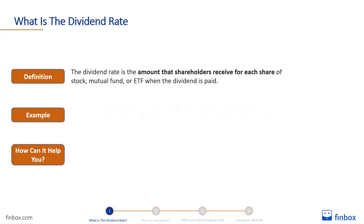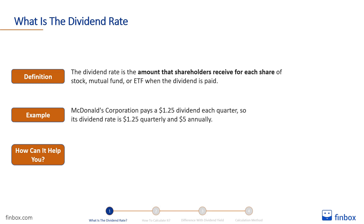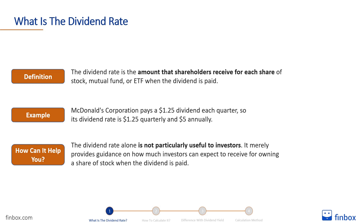The dividend rate is the amount that shareholders receive for each share of stock, mutual fund, or ETF when the dividend is paid. For example, McDonald's Corporation pays a $1.25 dividend each quarter, so its dividend rate is $1.25 quarterly and $5 annually. The dividend rate alone is not particularly useful to investors — it merely provides guidance on how much investors can expect to receive for owning a share of stock when the dividend is paid.